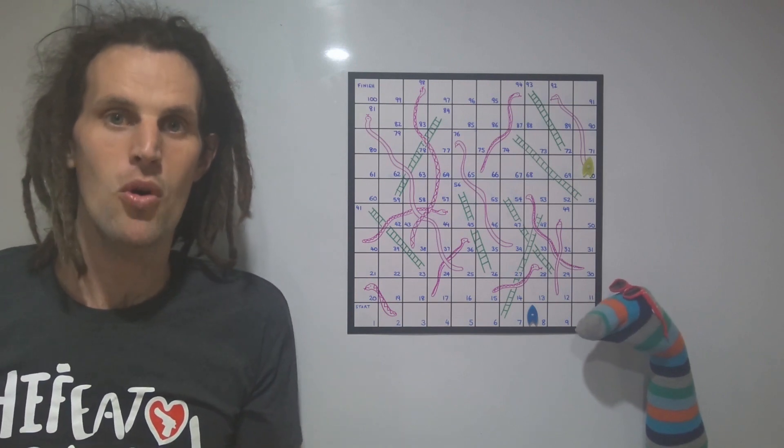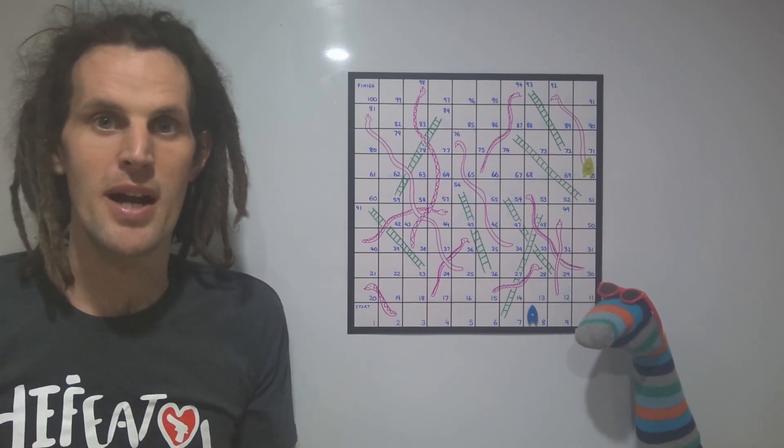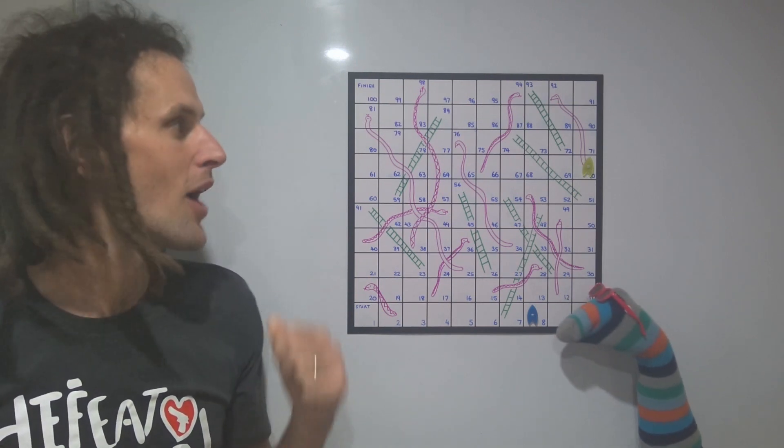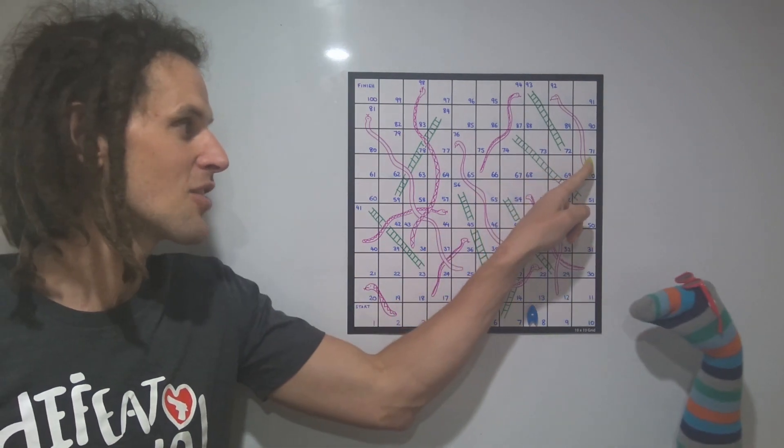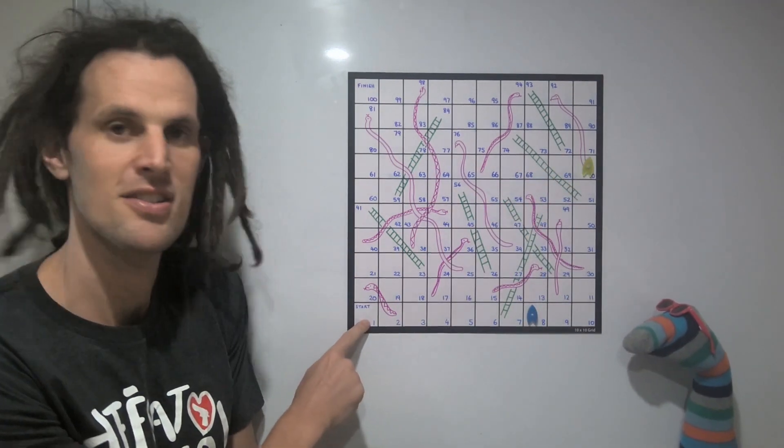If you want to make the game even more interesting, you can add some algebraic thinking into the mix by causing players who get landed on by an opponent to go all the way back to the start.